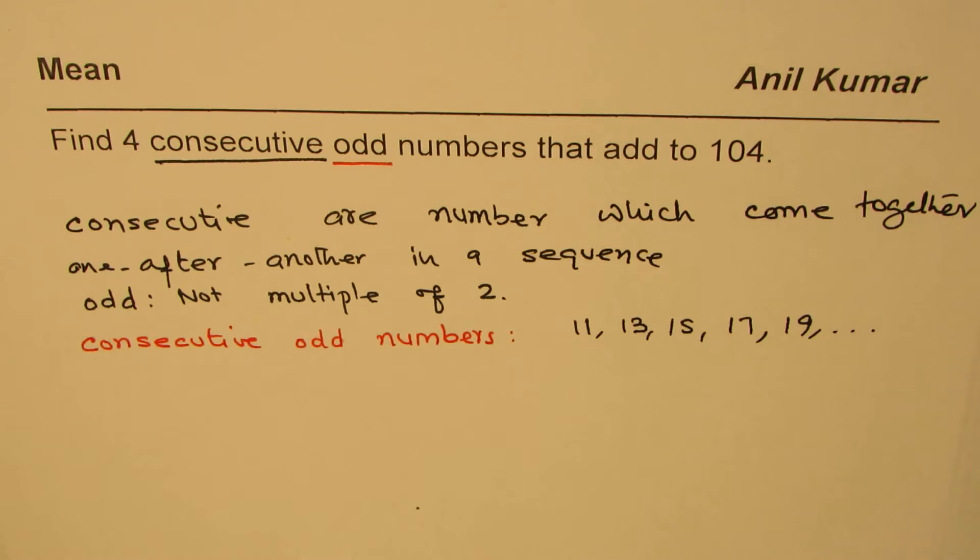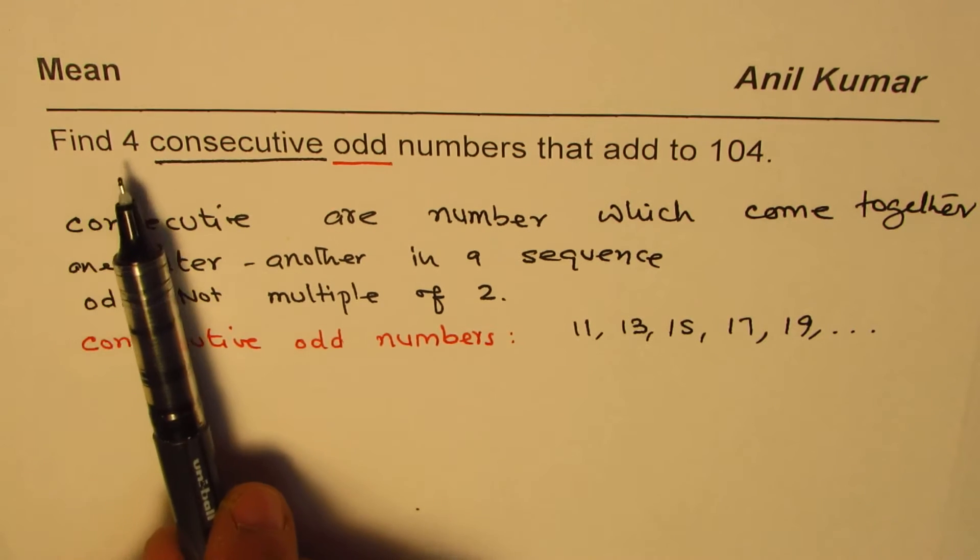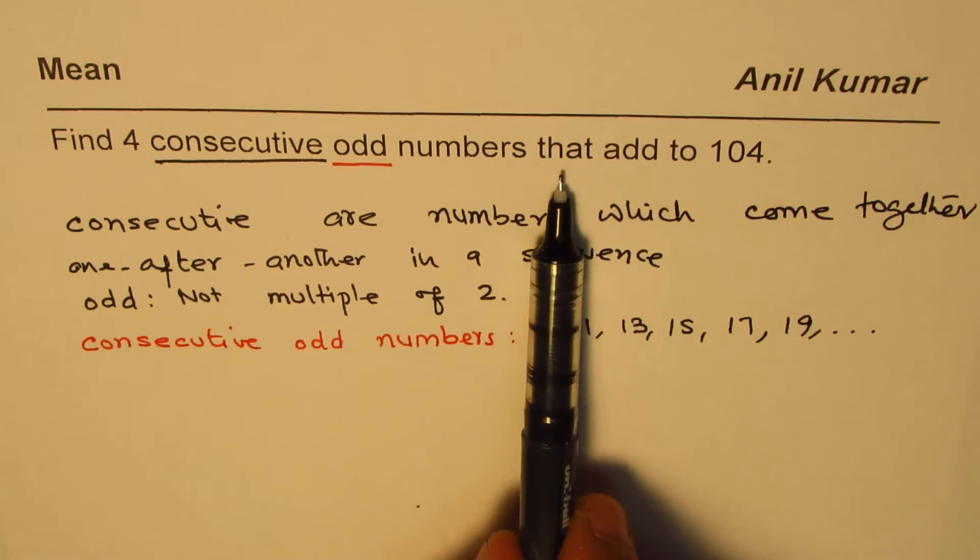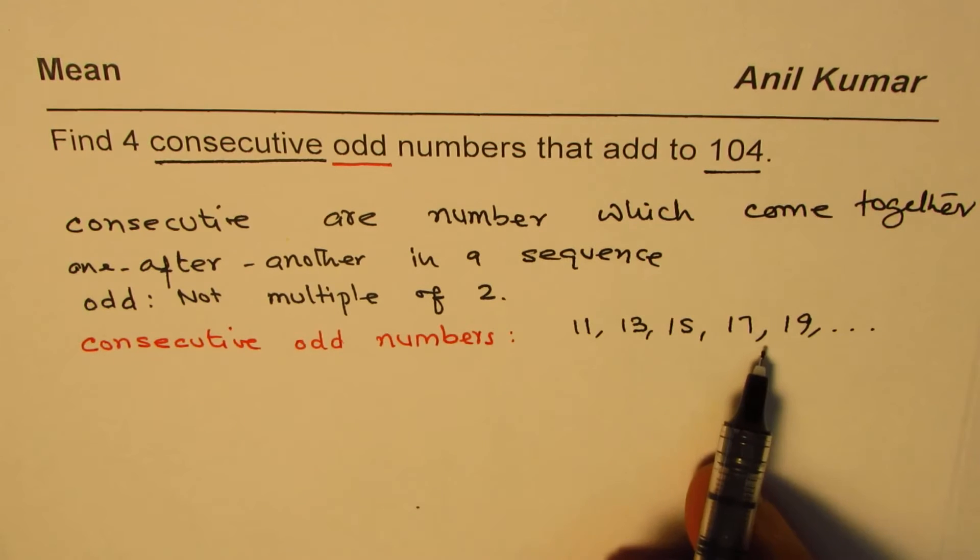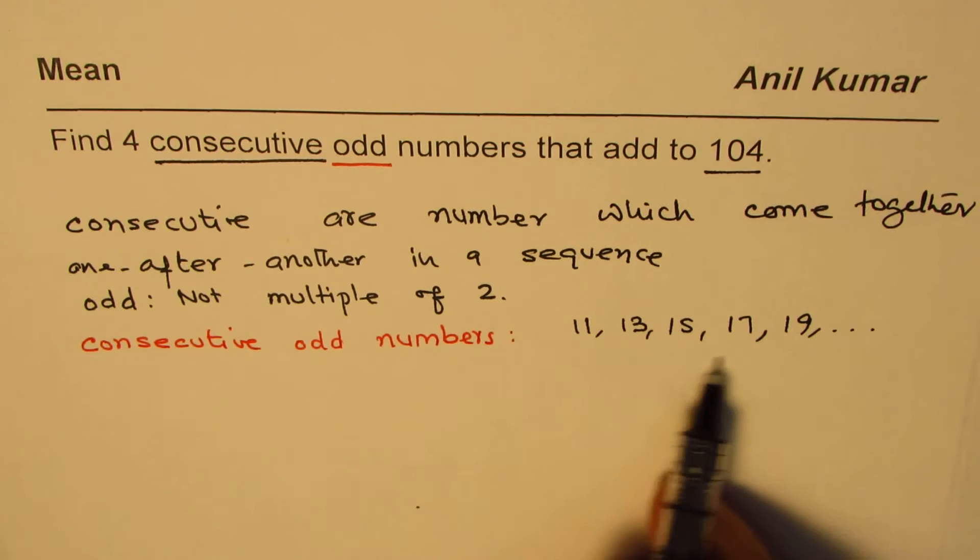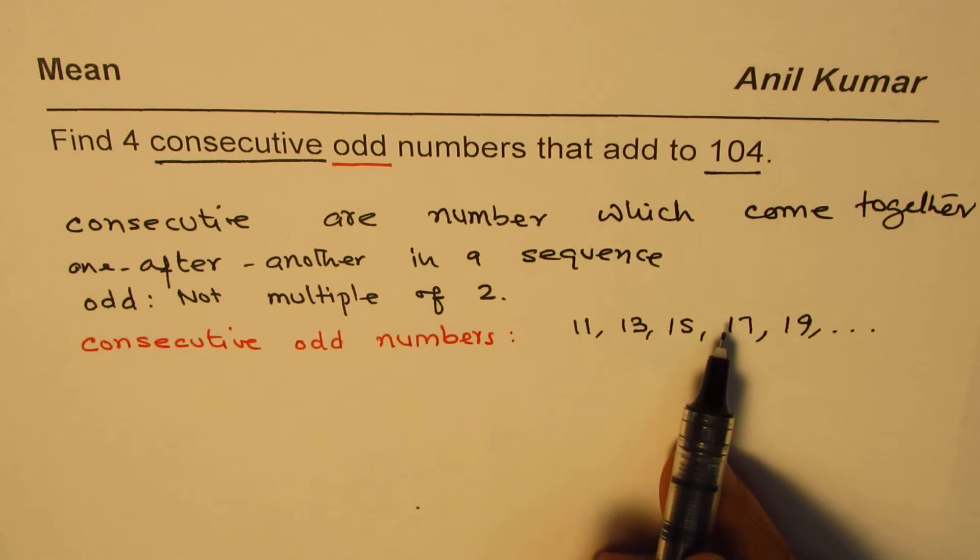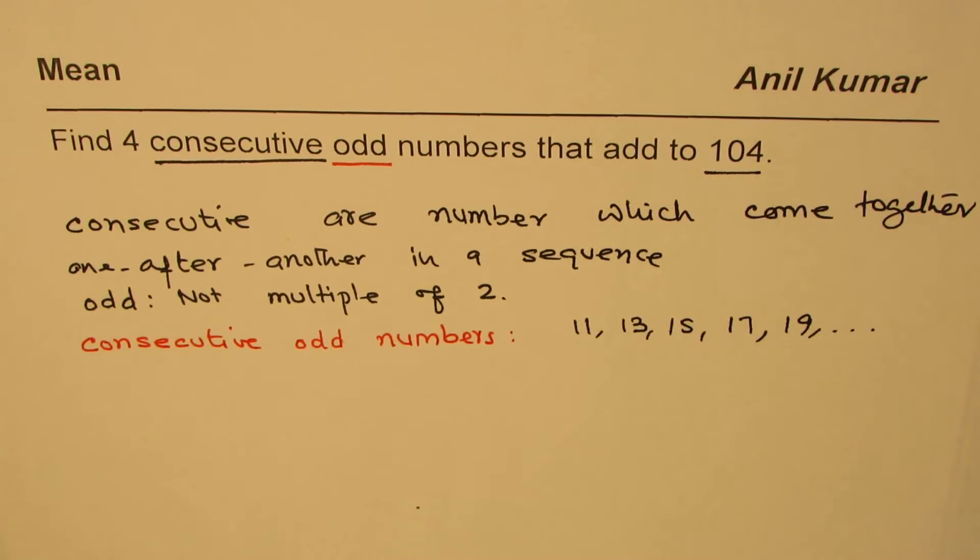So these are called consecutive odd numbers. Now the question is: find four consecutive odd numbers that add to 104. So if I add, we should get 104. We want those four consecutive odd numbers. I hope the question is clear for you. You can pause the video, answer, and then look into my suggestion.